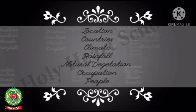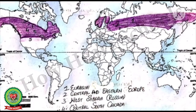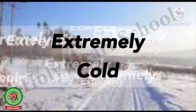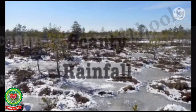The Siberian region covers the central parts of Eurasia and North America. It includes Central and Eastern Europe, West Siberia, central parts of South Canada, and northern parts of the United States of America.